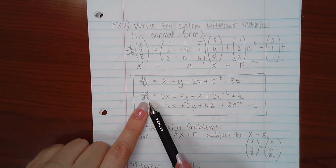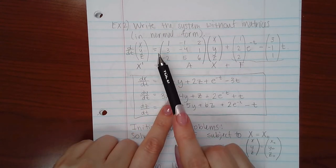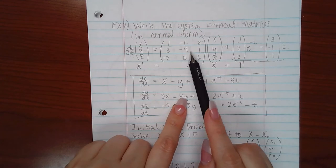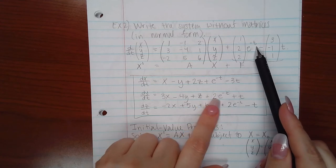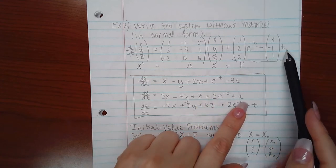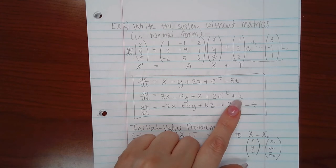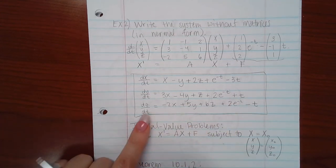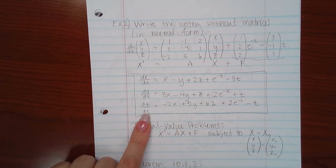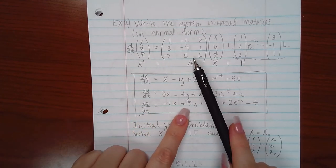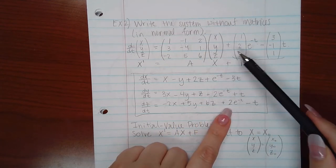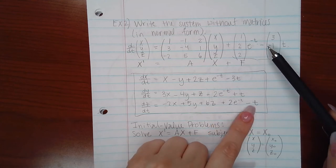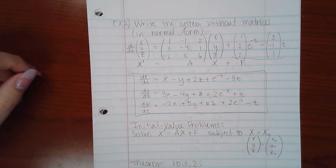We've got 3X, minus 4Y, plus 1Z, and then we have plus 2e to the negative T. And here we have negative negative 1T, which is just plus 1T, or just plus T. Then last row, derivative of Z, DZ/DT, negative 2X, positive 5Y, positive 6Z, and then plus 2e to the negative T, minus 1T, so just minus T. And that's in normal form.